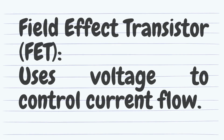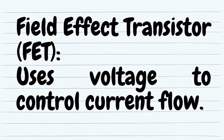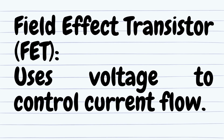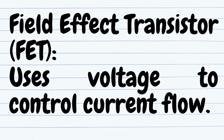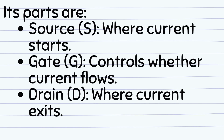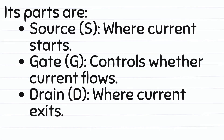Field Effect Transistor (FET) uses voltage to control current flow. Its parts are: Source (S), where current starts; Gate (G), which controls whether current flows; and Drain (D), where current exits.